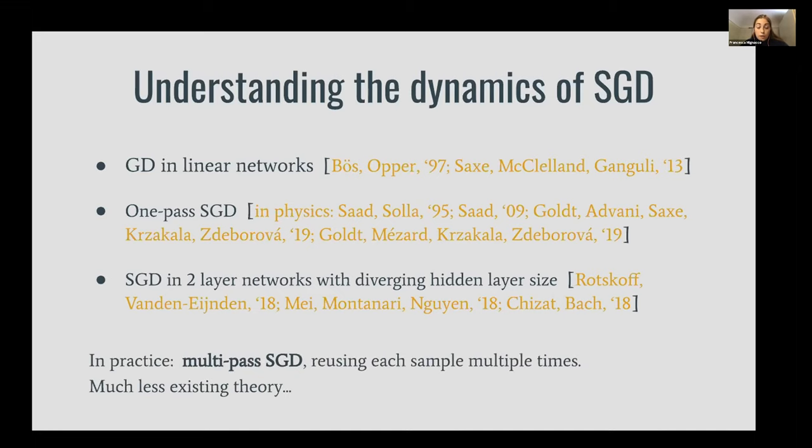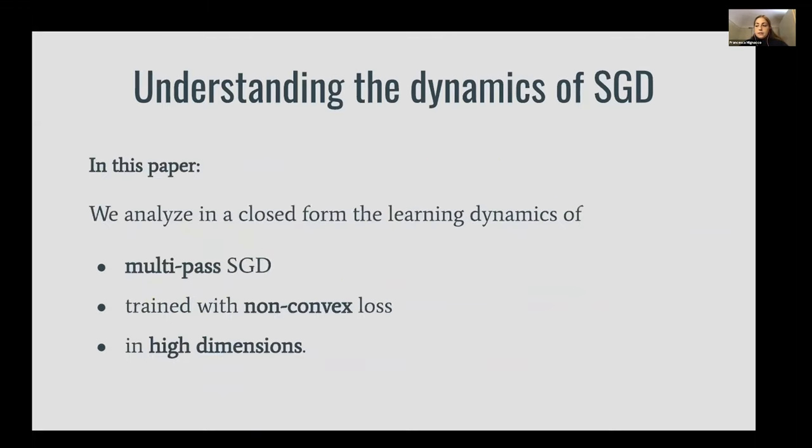However, in practical applications the training samples are reused multiple times, and this can lead to a large generalization gap that cannot be studied if one considers the online learning setting. In this paper we considered instead the multi-pass stochastic gradient descent algorithm trained with a generic loss that can be non-convex in high dimensions.